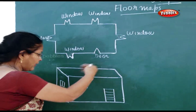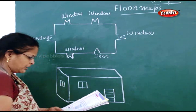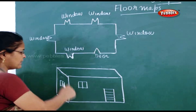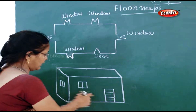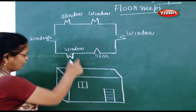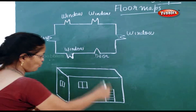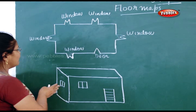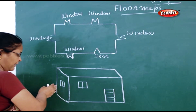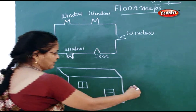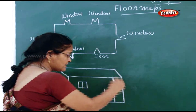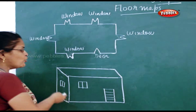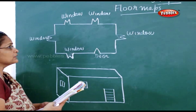Now, the view of the house after you draw it — this is the view of the house. Like one window, one door, and one window at the right-left hand side, one window at the left. But this is actually the view of the house.